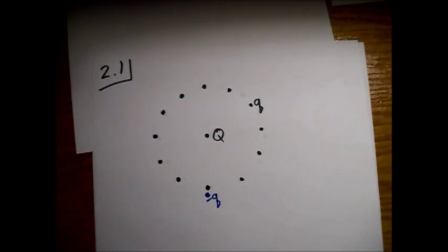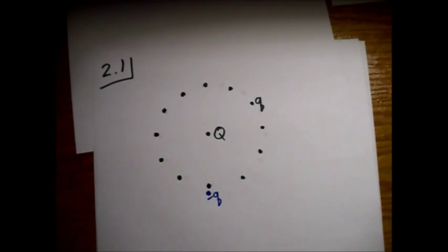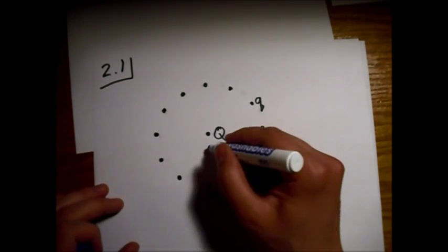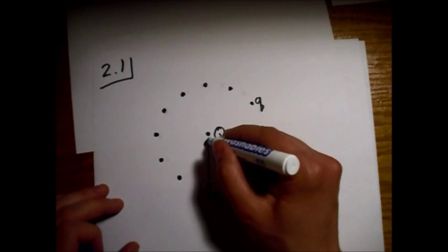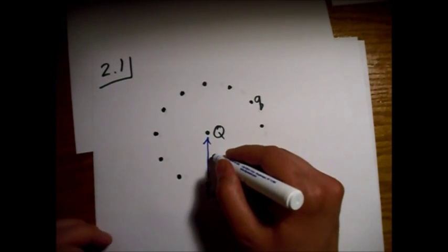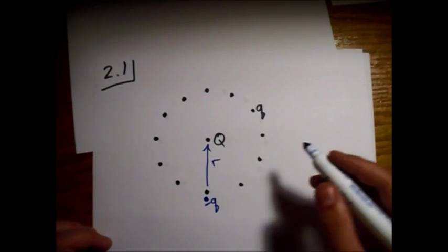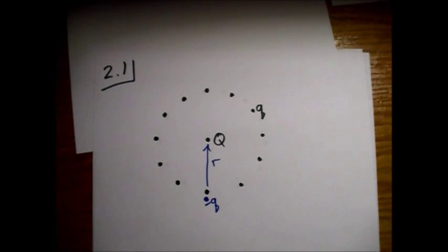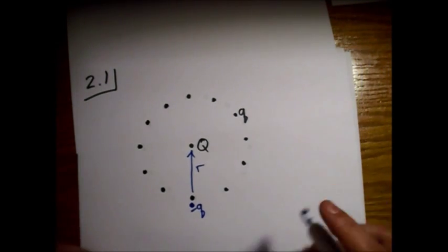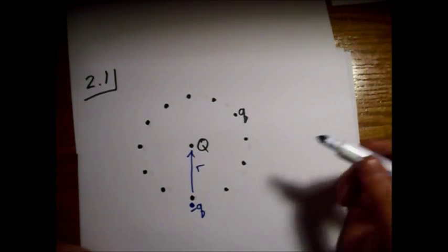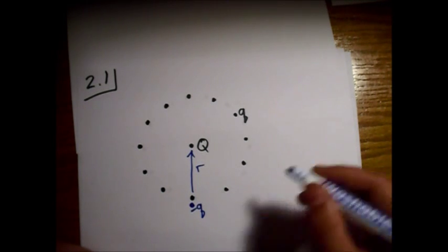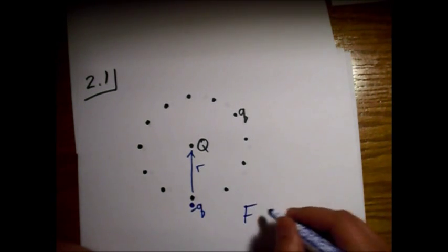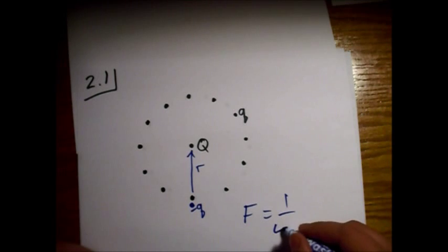So, what is the force on big Q? Well, if this is our R, just a separation vector, I guess Griffiths would use the cursive R there, but the force is just the 1 over 4 pi epsilon naught.